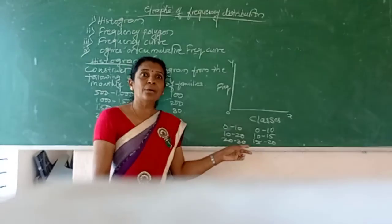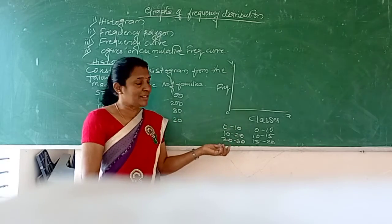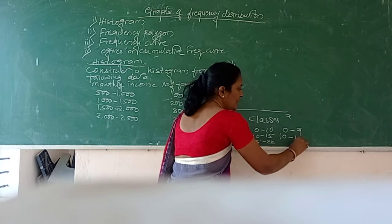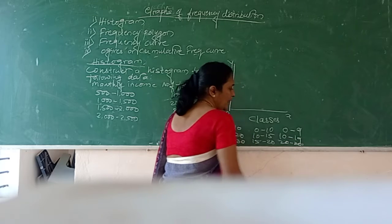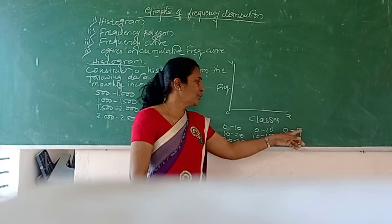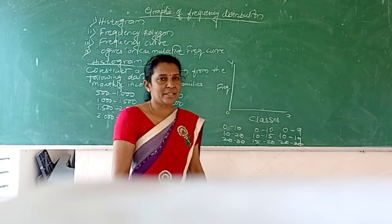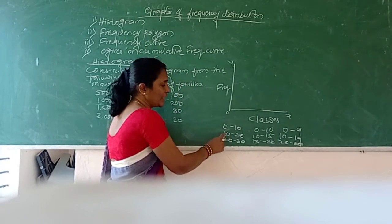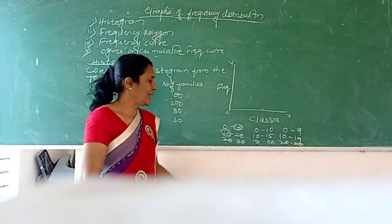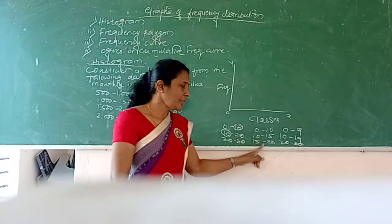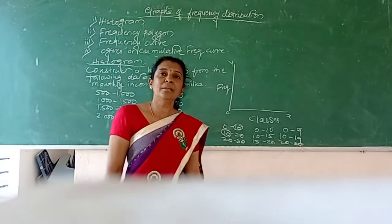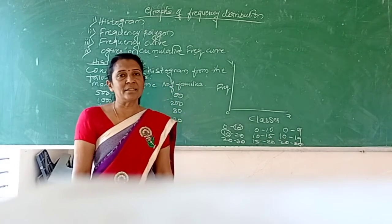But when you have discontinuous series, like 0 to 9, 10 to 19, 20 to 29, the upper limit of the first class is not the lower limit of the second class. In continuous series, like 0 to 10, 10 to 20, 20 to 30, the upper limit of one class is the lower limit of the next class.